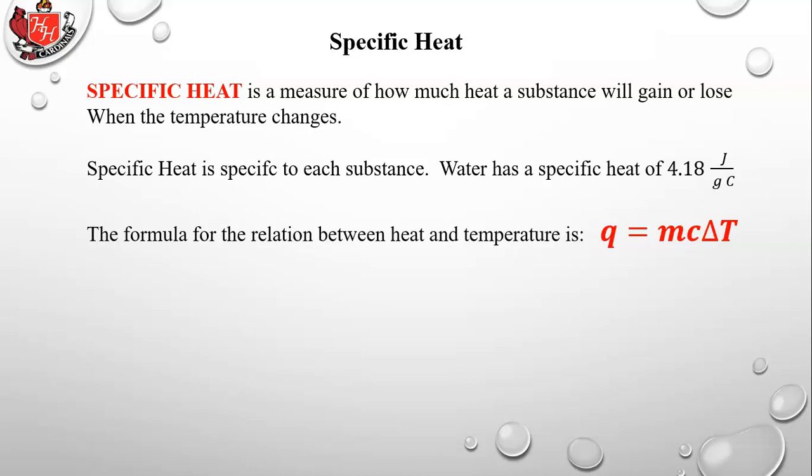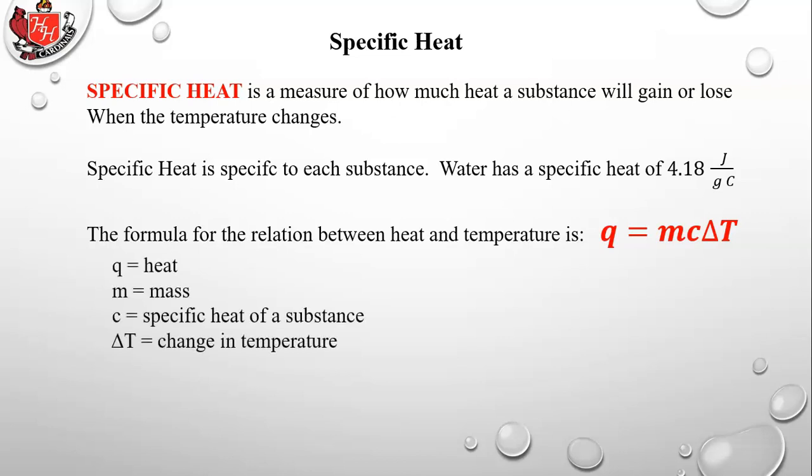The formula relating heat and temperature is: q = mcΔT, where q is heat, m is mass, c is the specific heat of the substance, and ΔT is the change in temperature. We don't have a way to measure heat directly, but we can measure temperature change with a thermometer. By knowing the substance (which gives us the specific heat c) and the mass, we can calculate the heat. The specific heat can be looked up in a chemistry textbook or online.